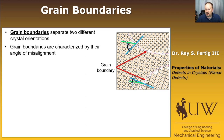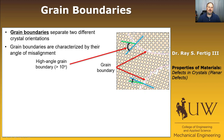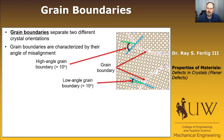If you have a large angle — typically greater than 10 degrees — we call it a high angle grain boundary. If it's less than 10 degrees, we call it a low angle grain boundary. Those aren't hard numbers, just rough guidelines — sometimes people change that definition a little bit.